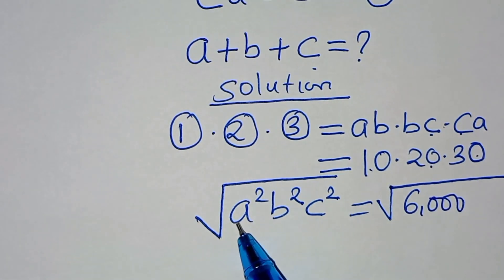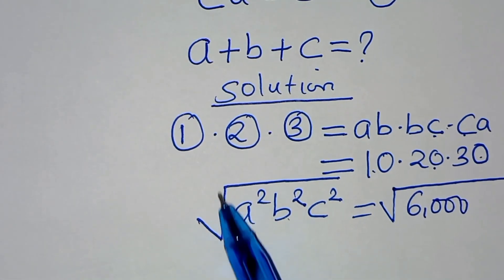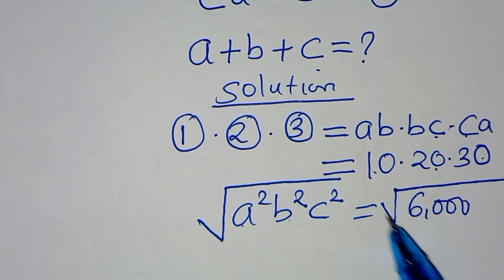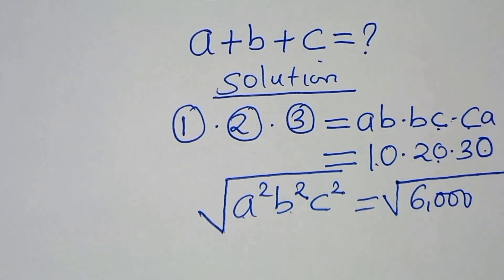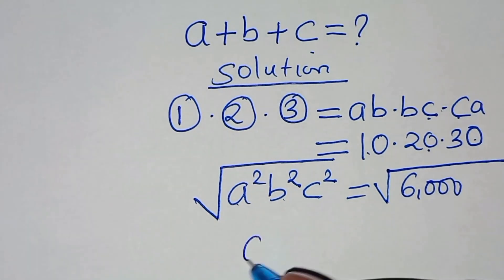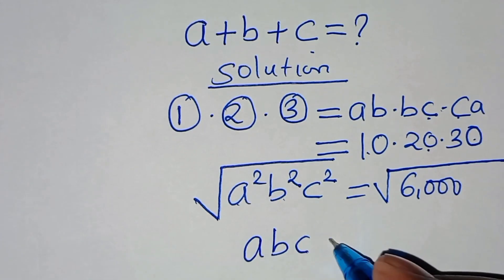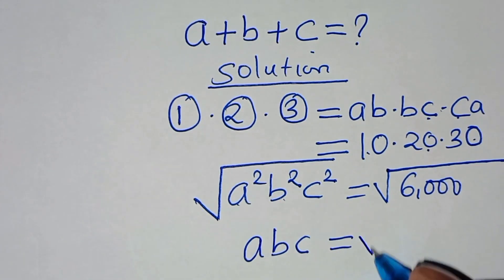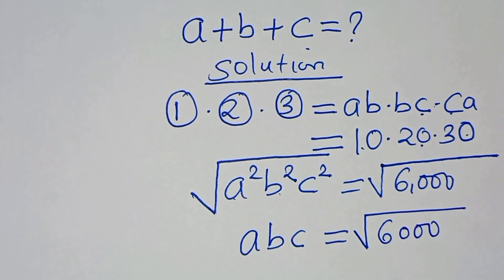Now, to find the values of a, b, and c, we introduce a square root on both sides. So now a times b times c equals the square root of 6,000.